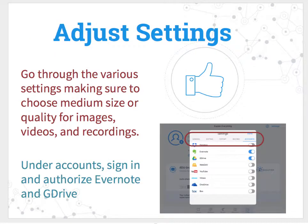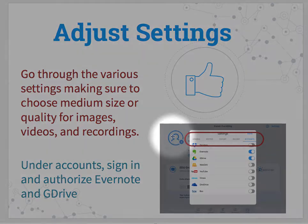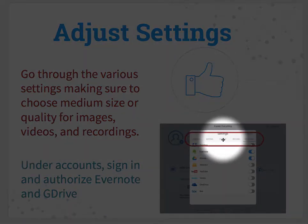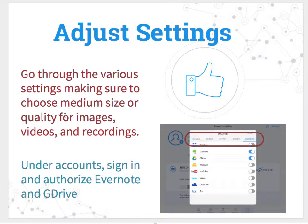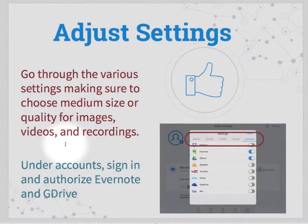Once you get there, you want to go through the various settings under General, Editing, Export, and Recording, and change anything that you need to to be medium-sized or medium-quality for videos and recordings. The last tab for Accounts, you will want to authorize Evernote and Google Drive so that you can share right into those two applications.